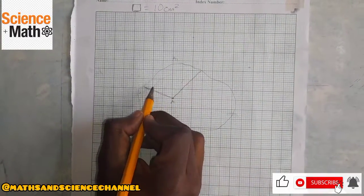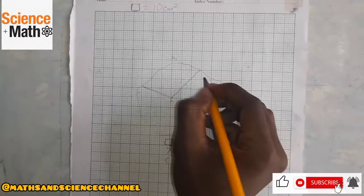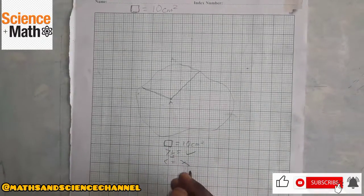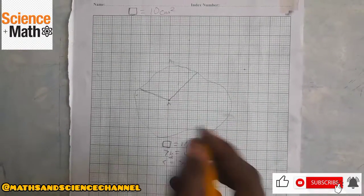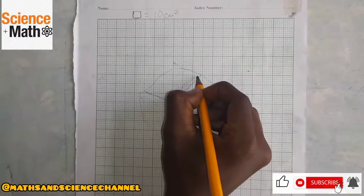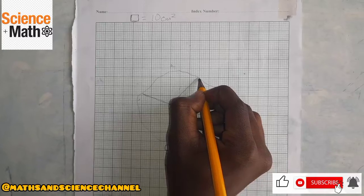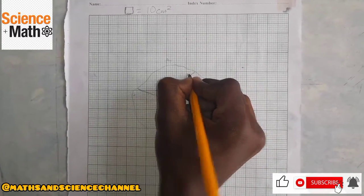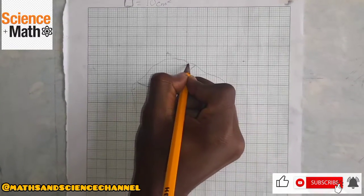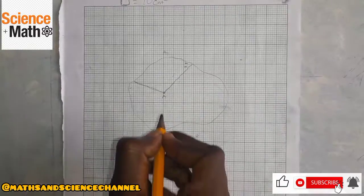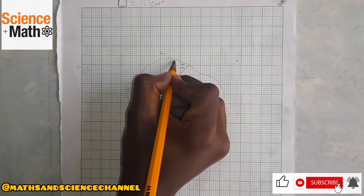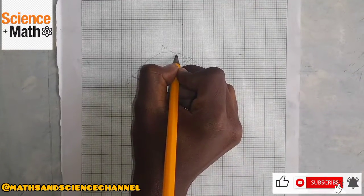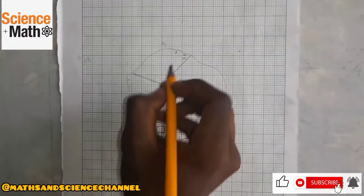So if this diagram is the area for A, we count the number of complete boxes. If we have a complete box we number it, and if we have more than half of a box we count it as one. Looking at this section — it is less than half, so we ignore it. This part too is less than half, so we ignore it. This part is more than half, so we count that as one.